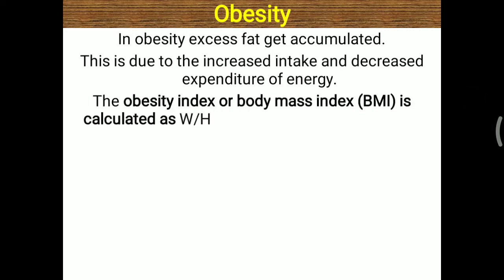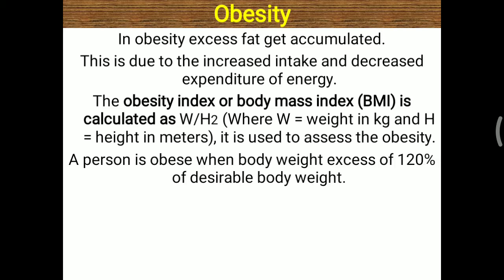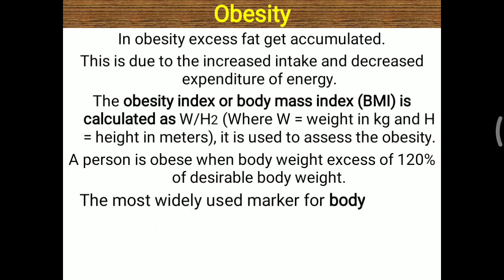The body mass index or BMI is calculated as W divided by H squared, where W is weight in kilograms and H is height in meters. It is used to assess obesity. A person is obese when body weight is in excess of 120% of desirable body weight; up to 120% is normal, but more than that is called obesity.